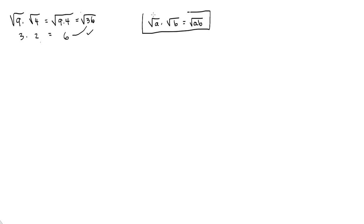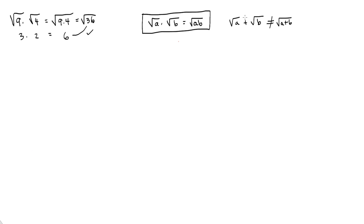Now remember when I talked about adding and subtracting, you could not do this — you can't add or subtract under radicals like that. Let's put a big red X through this to remind you that is not acceptable. You can't do it. But for multiplication, you sure can.